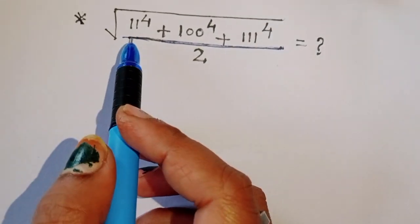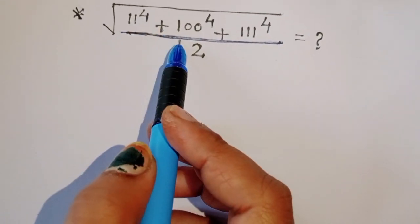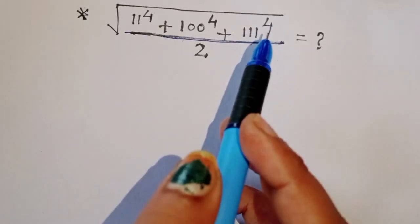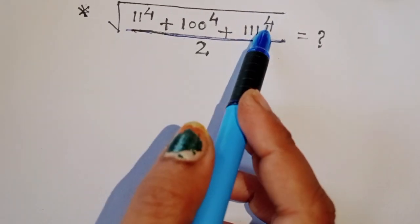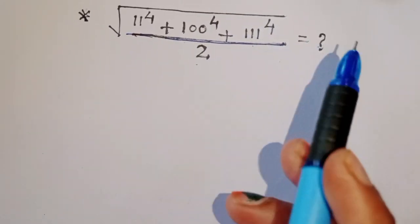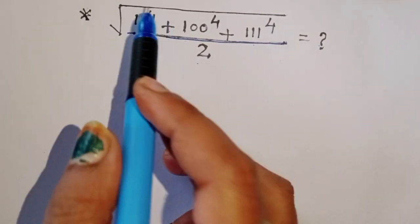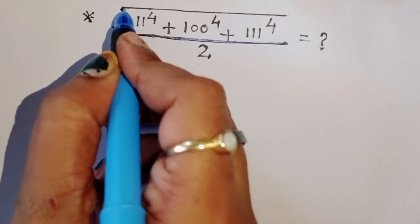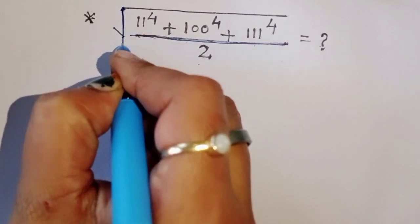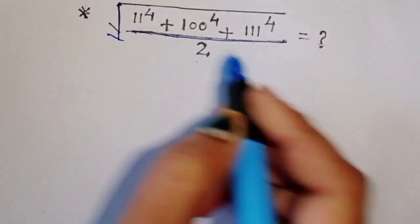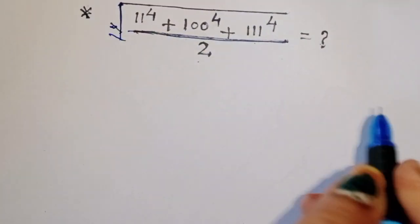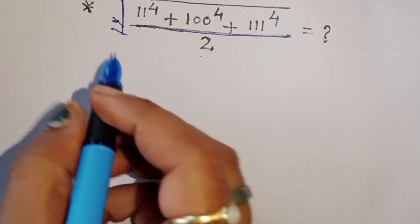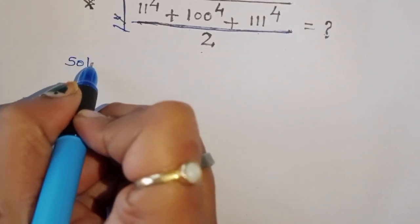The question given is: the square root of (11 to the power 4 plus 100 to the power 4 plus 111 to the power 4) divided by 2. We have to find out the value of this expression, which is all under a square root. Let's see the solution.